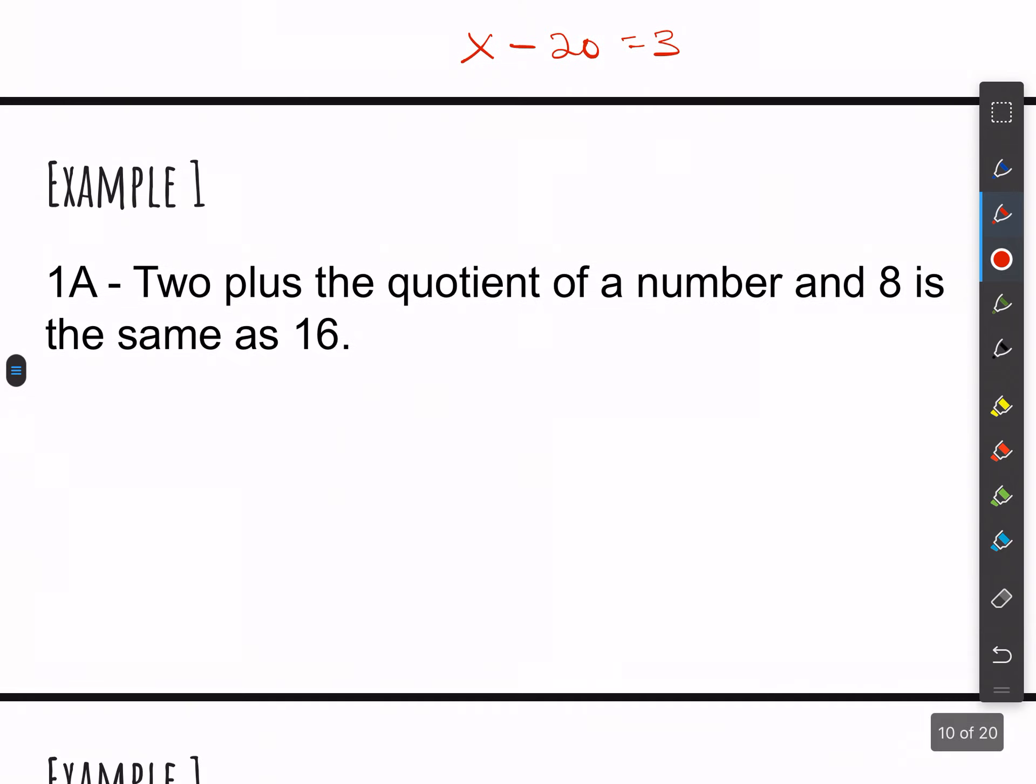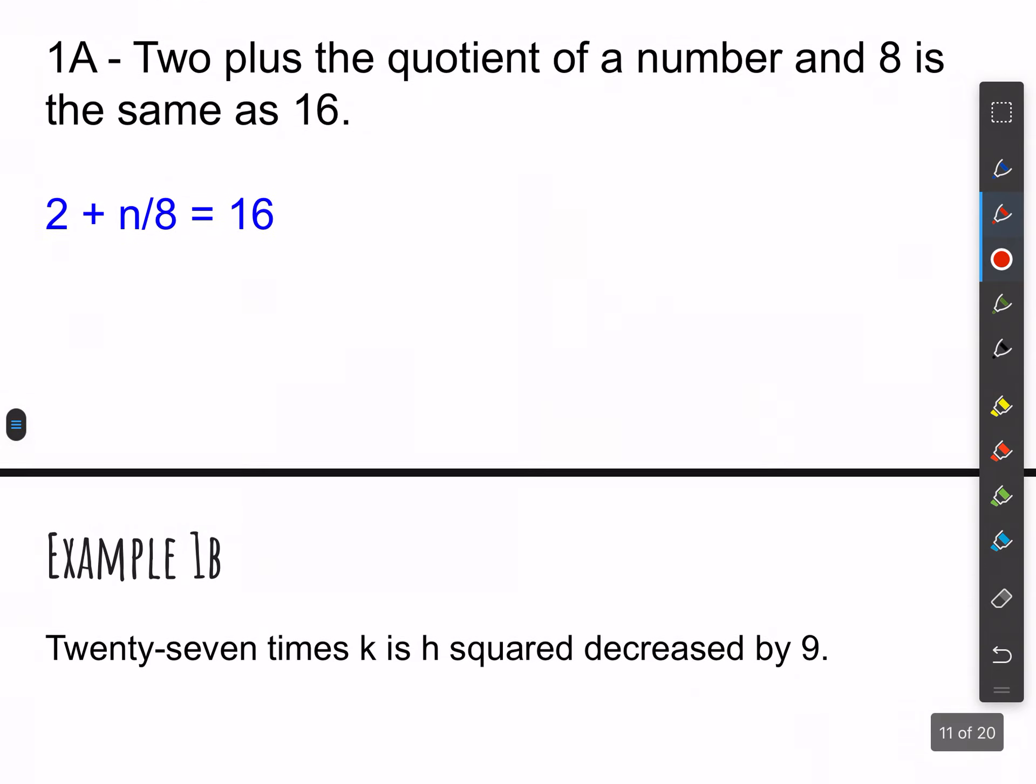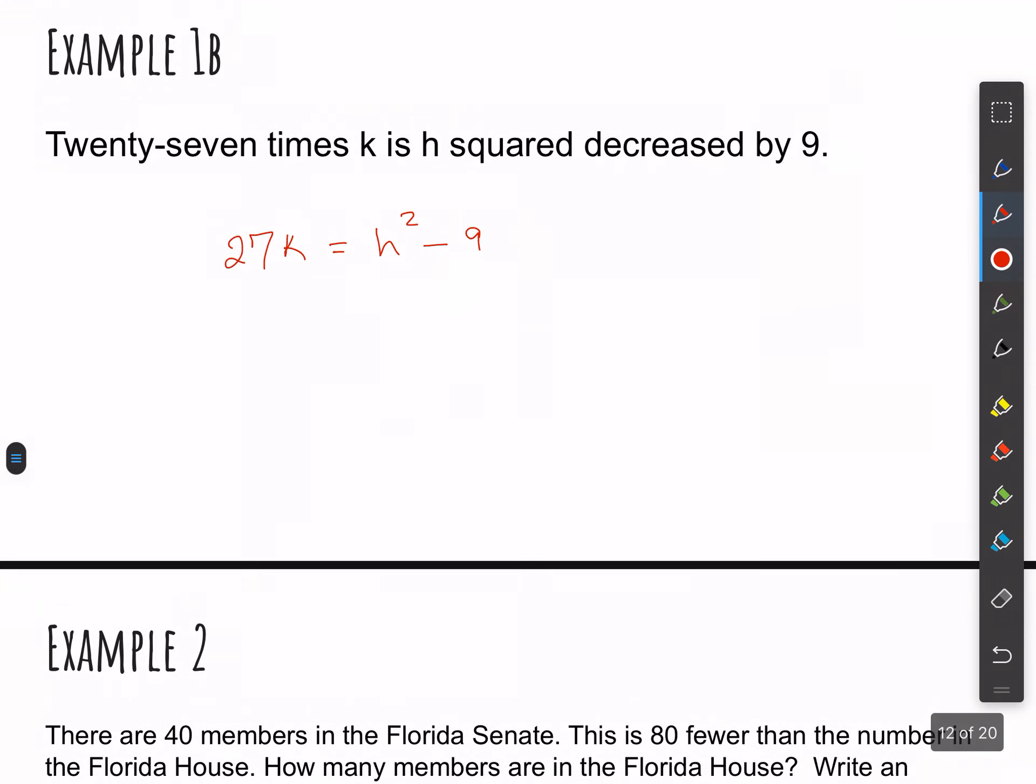So example 1 says 2 plus the quotient of a number. So we'll call that x and 8 is the same as 16. There you go. Oh, I guess I did it for you here on the next slide. That's cool. And then for 1b, it says 27 times k is h squared decreased by 9. So try that one out. It says 27 times k. So 27k is equals h squared decreased by 9. That's how you would do 1b.